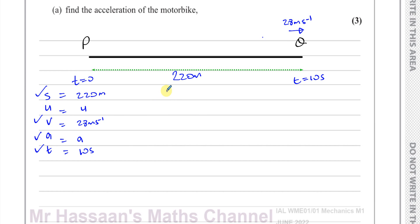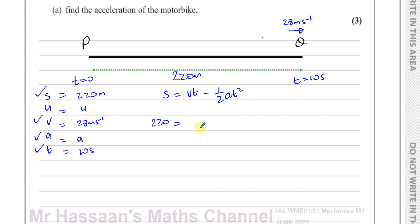One of the equations of motion is S = VT − ½AT². There's also S = UT + ½AT². Now I think S = VT − ½AT² is the one we need to use because we have V, S, T, and we have to find A. So if we replace S with 220, V with 28, T with 10, minus a half times A times 10 squared — A is the only unknown.